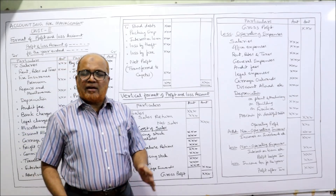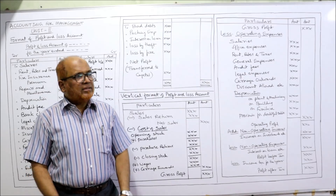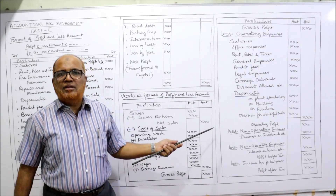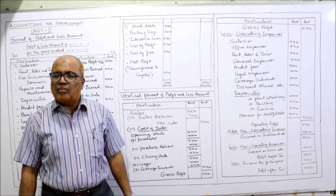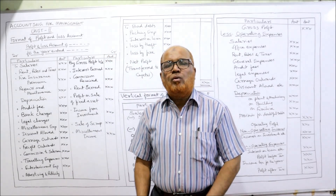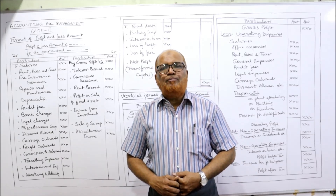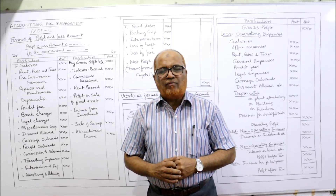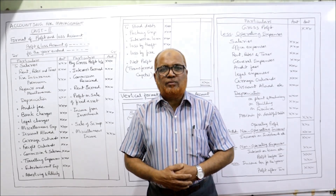Whether we make a horizontal or vertical format, we will get the same answer. The vertical form of the income statement or profit and loss account is more widely used in present business. In the next video I will explain the balance sheet format, and then we will start problems on financial statements consisting of profit and loss account and balance sheet.